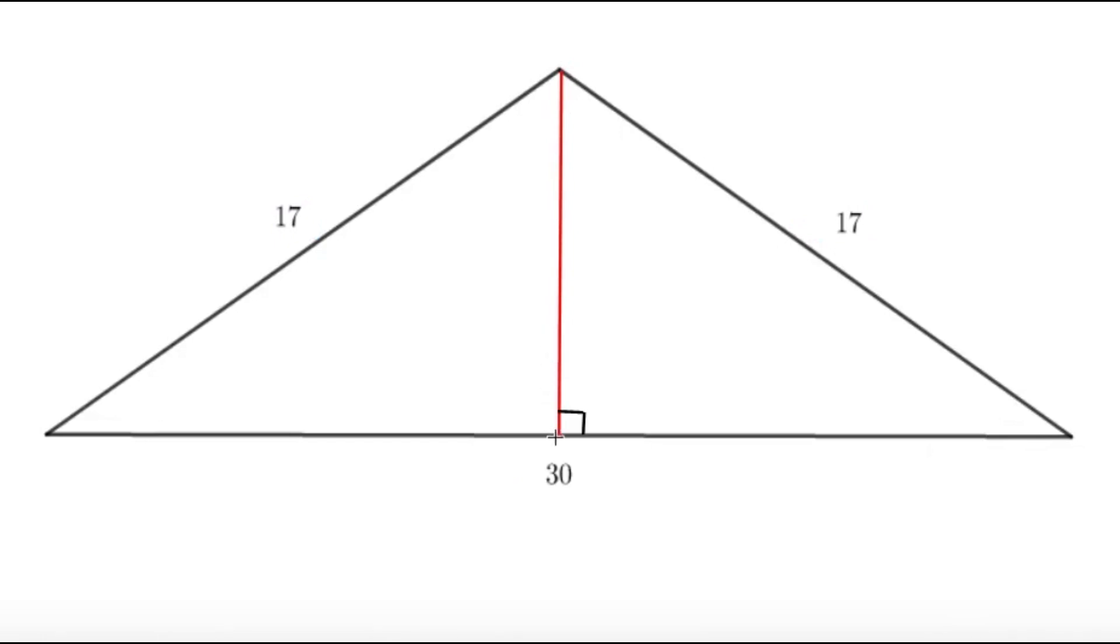Since we have an isosceles triangle, we know that the altitude to this side will be bisected due to symmetry. This segment of length 30 will be split into two segments. This part would be 15 and this part would be 15.